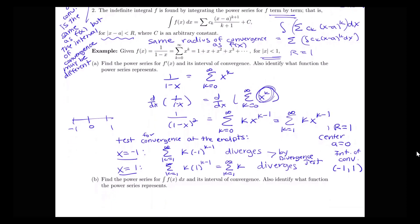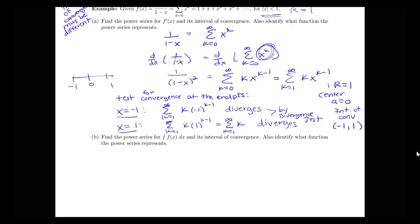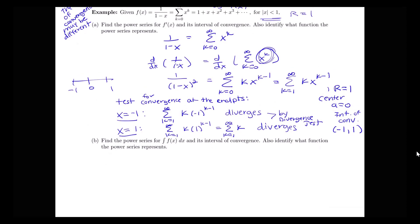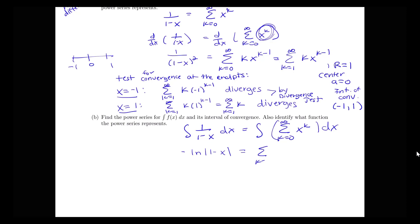Now let's find an integral. I was able to use differentiation to find a power series for 1 over (1 minus x) squared. Now I'd like to take the integral of both sides of 1 over (1 minus x) equals the sum of x to the k. The integral of 1 over (1 minus x) dx equals the integral of the sum from k equals 0 to infinity of x to the k dx. The left side gives negative log of (1 minus x), and the right side gives the sum of x to the k plus 1 over k plus 1, plus C.